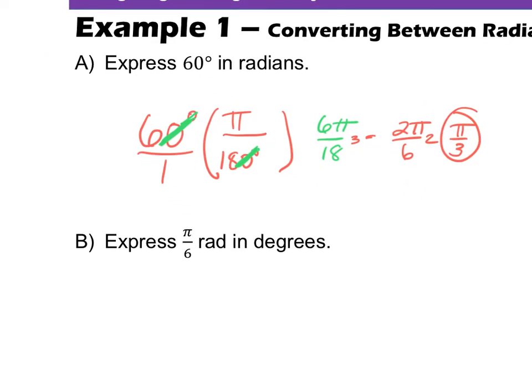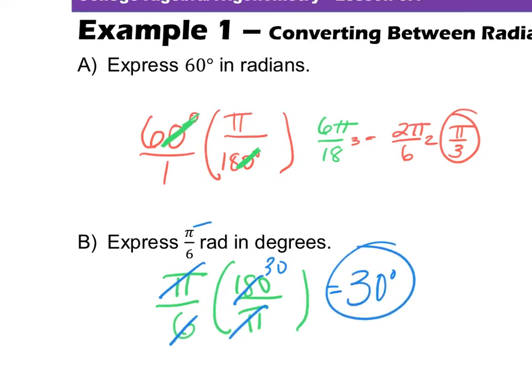Again, if we come to number 2, it says express pi over 6 radians in degrees. So look, I start off with pi over 6, and now my conversion factor is going to be pi over 180 or 180 over pi. Since I want my pi's to cancel out, I'm going to put pi down here on the bottom and write 180 on the top. And if you notice, I have a pi on the top, pi on the bottom, they cancel out. 6 goes into 180, how many times? 30 times. So when we convert pi over 6 to degrees, it's 30 degrees. Simple as that.